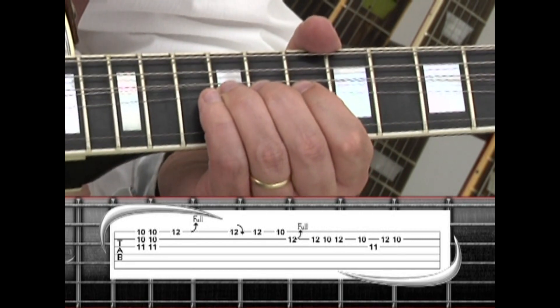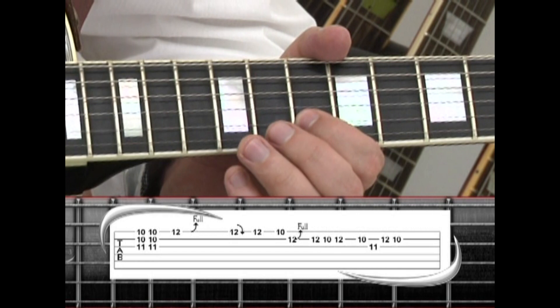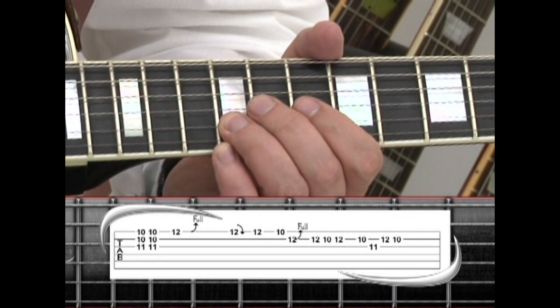Bend, 12, 10, 12, 10, to 3rd string 11, back to 2nd string 12, 10.